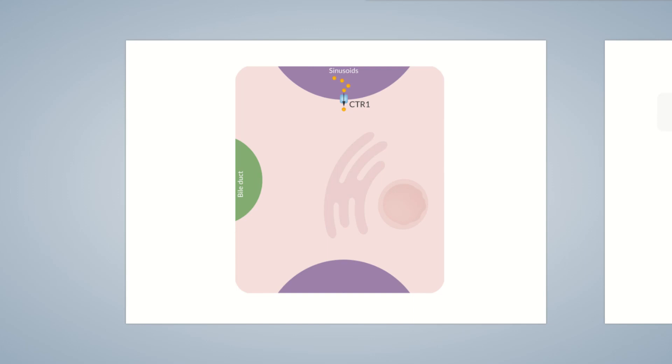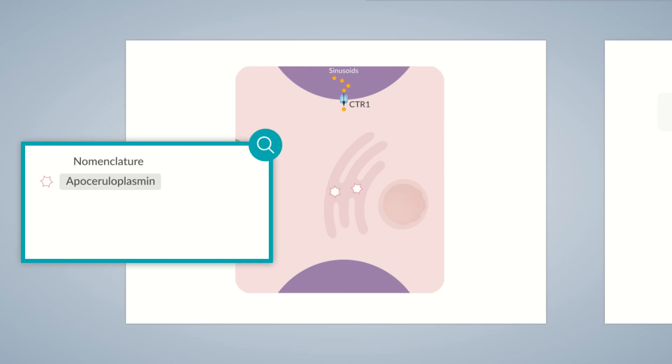The carrier protein that binds to copper is an enzyme called apoceruloplasmin. Before we continue, let's briefly touch base on the nomenclature. If copper ions are not bound to a carrier protein, the protein is called apoceruloplasmin. However, once a copper ion binds to the transporter, it's termed ceruloplasmin.